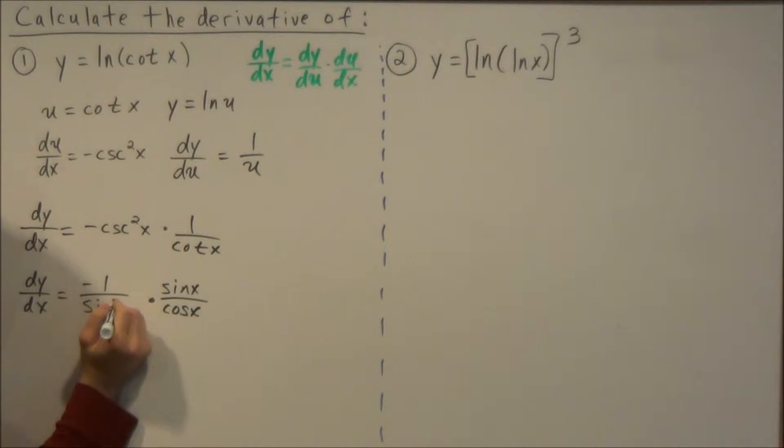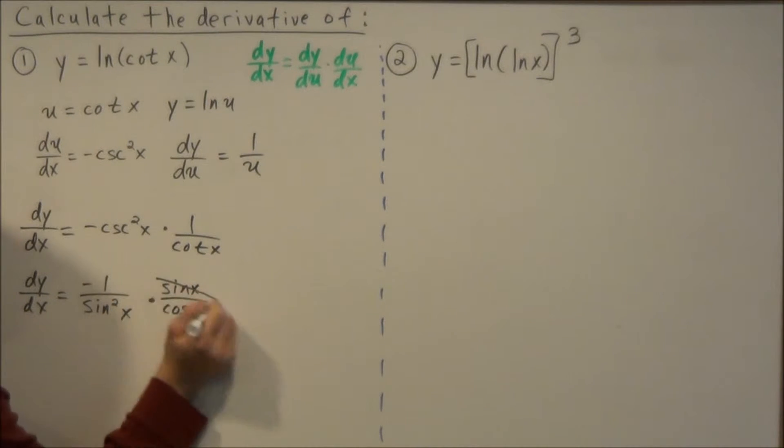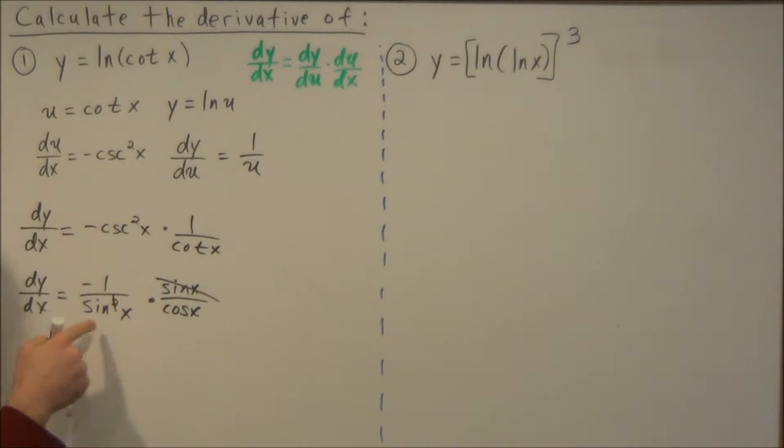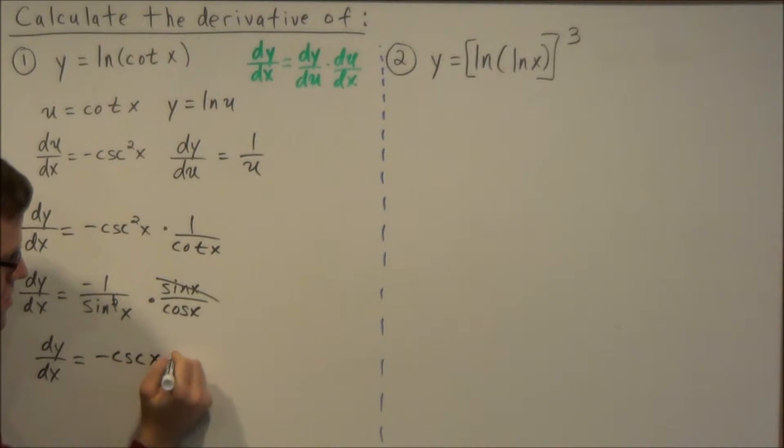And now we have common factors that can cancel out. Sine x over sine squared x. This sine x cancels out and this reduces this down to just sine of x. So then dy dx equals, this is negative, and one over sine is equal to cosecant x, and one over cosine is equal to secant x.